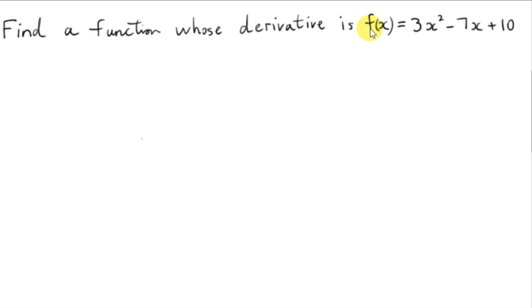Suppose that we want a function whose derivative is little f of x equals 3x squared minus 7x plus 10. Let's call that function big F of x.